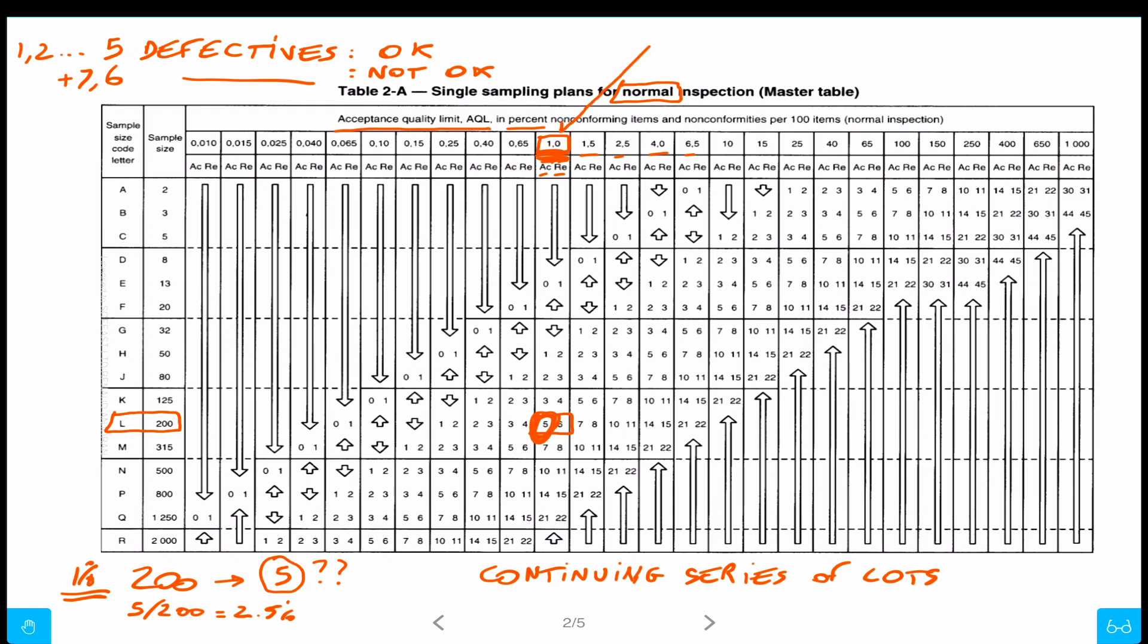We're accepting an AQL of one percent, again as an average over a series of batches. So here we are very lax. With LQ it's the opposite, we are much stricter. So I hope that was useful. I hope I covered at least the most important concepts here. Thank you.